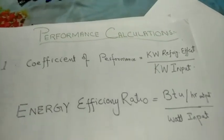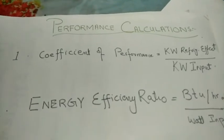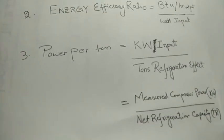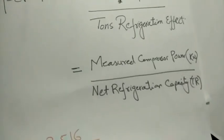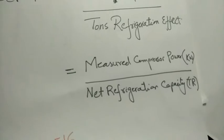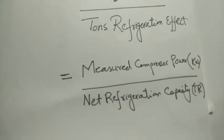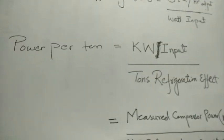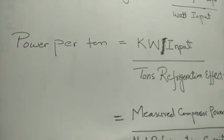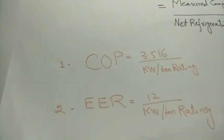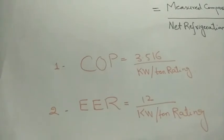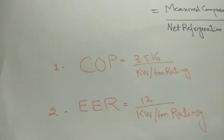In order to calculate COP and EER, we first calculate kilowatt per ton, which is the measured compressor power divided by net refrigeration capacity. Once you calculate kilowatt per ton, you can easily calculate COP and EER. COP equals 3.516 divided by kilowatt per ton. Energy Efficiency Ratio equals 12 divided by kilowatt per ton.